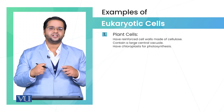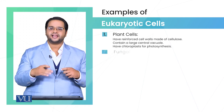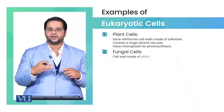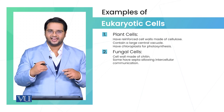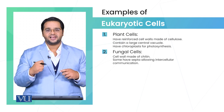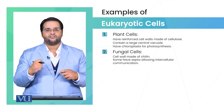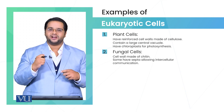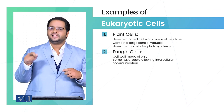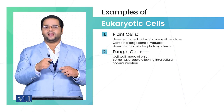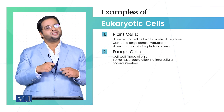In addition to that, the second most important eukaryotic cell we are going to discuss is the fungal cell. The fungal cell also has a cell wall, but it is made of chitin, while the plant cell wall is made of cellulose.